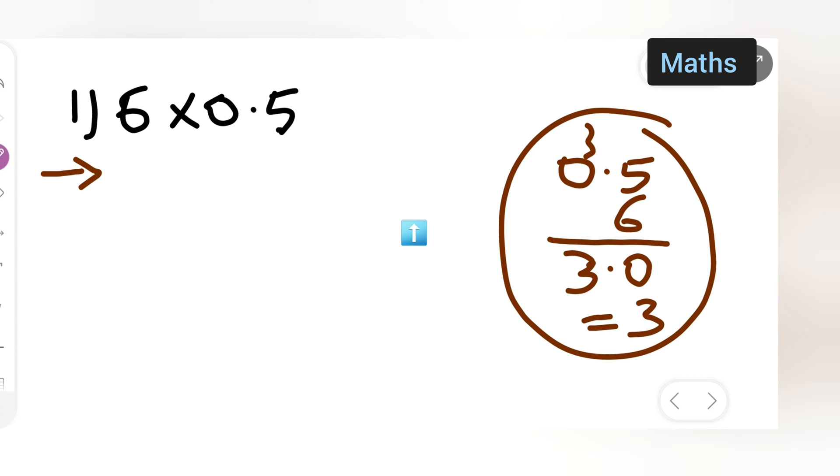We are applying a different method. That is, 6 multiplied by 0.5 will be equal to 6 multiplied by 5 upon 10, right? So basically what I have done is write down 6 over here, 6 multiplied by 5 upon 10.